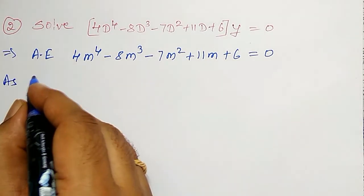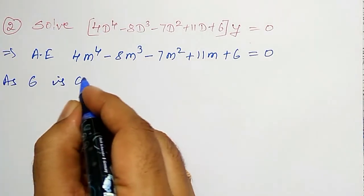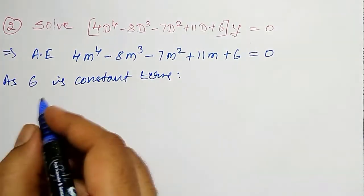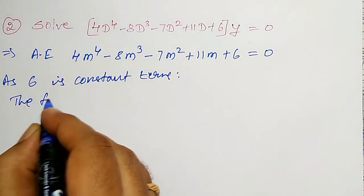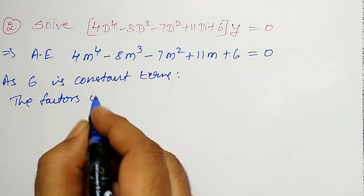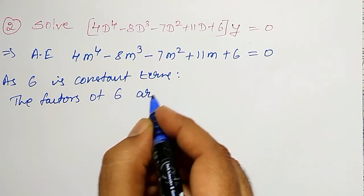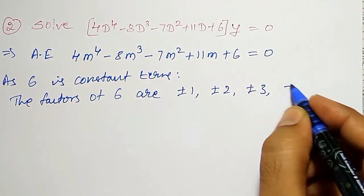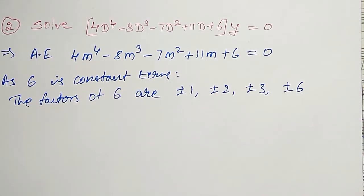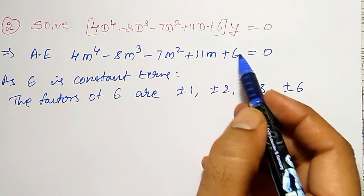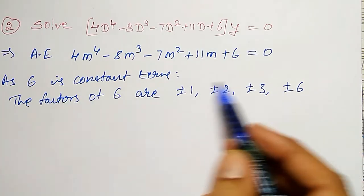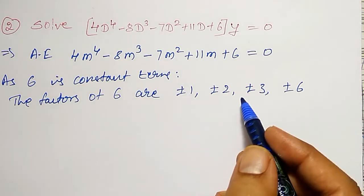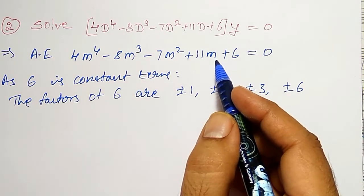How to find out the trial and error method? As 6 is constant term, the factors of 6 are plus or minus 1, plus or minus 2, plus or minus 3, and plus or minus 6. Constant term is 6 here. Its factors, the roots are lying in between these terms. Therefore, let me try and check one of the root from this one.